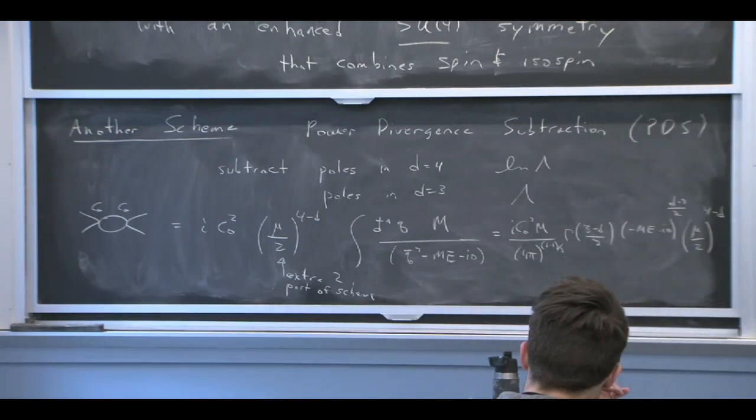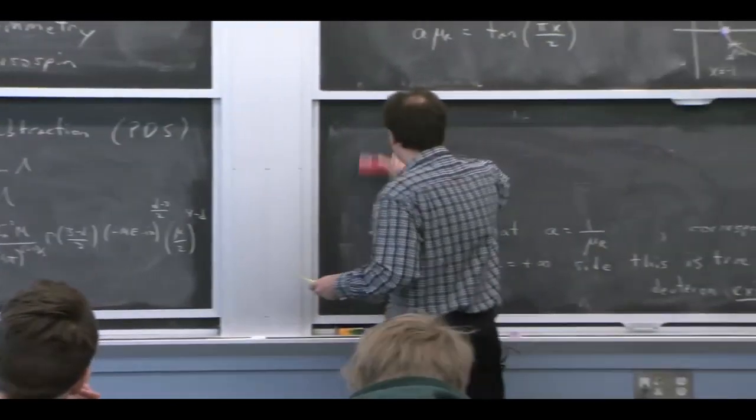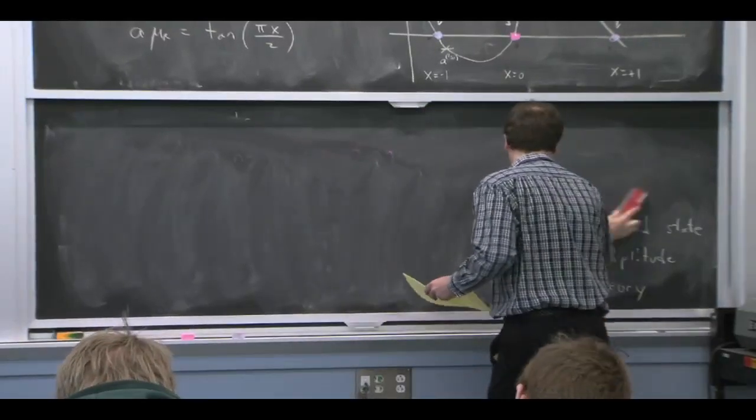So this is just the result that we would write down for dimensional regularization. Dimensional regularization is not a scheme. Scheme has to do with what we subtract. Dimreg is just how we regulate.